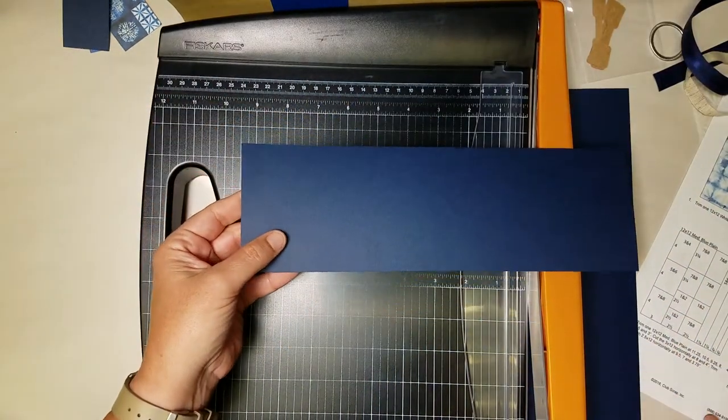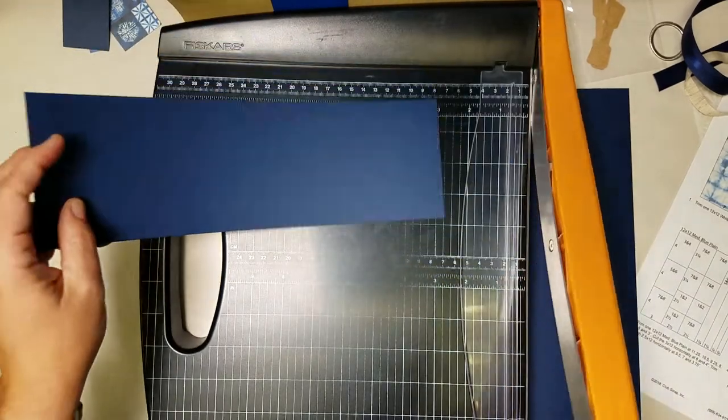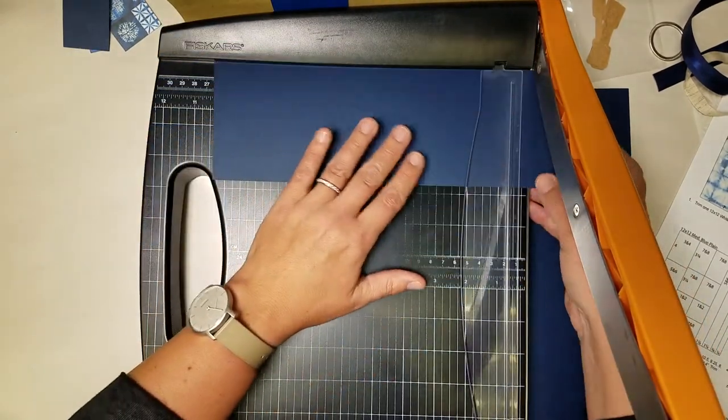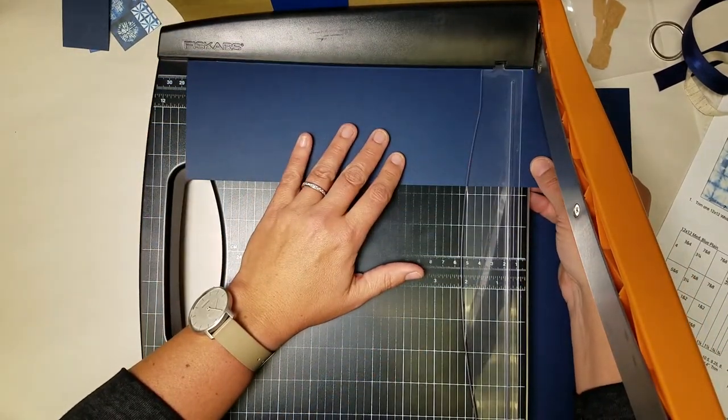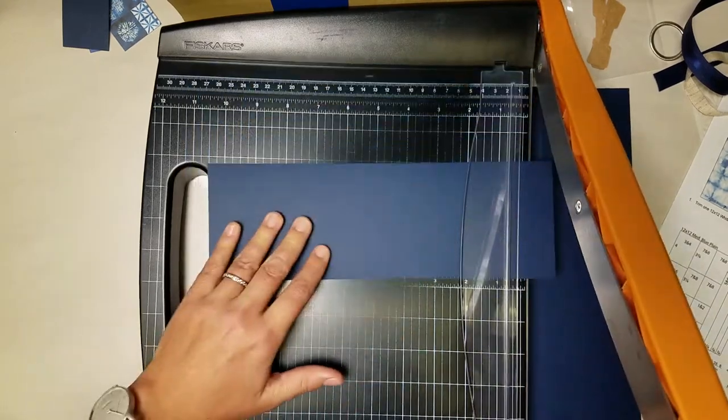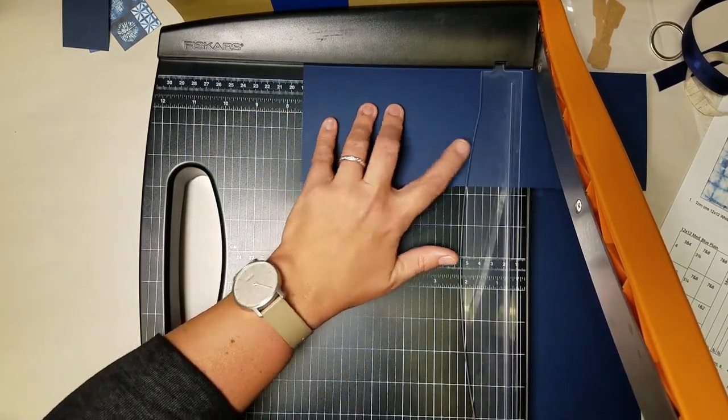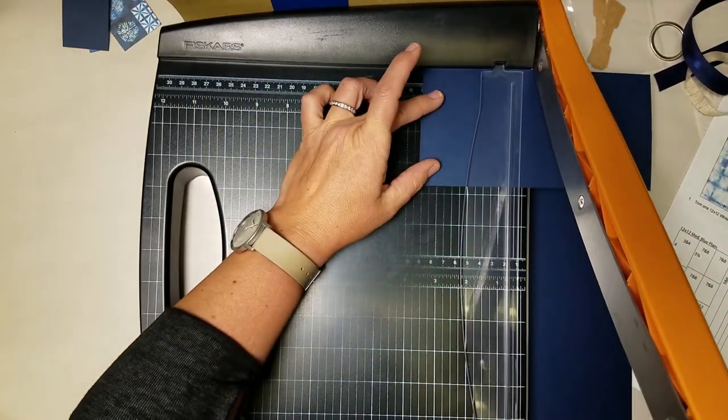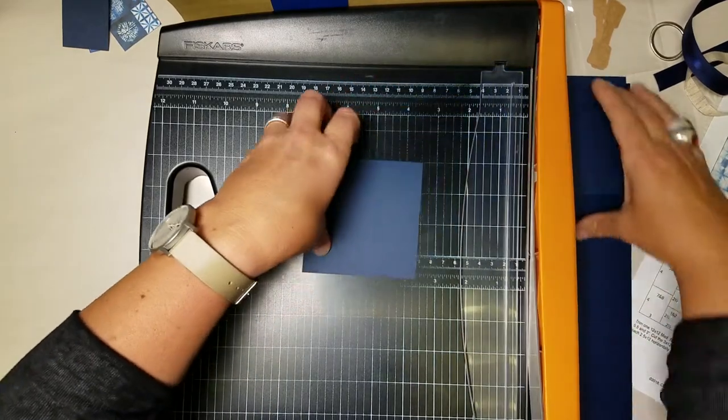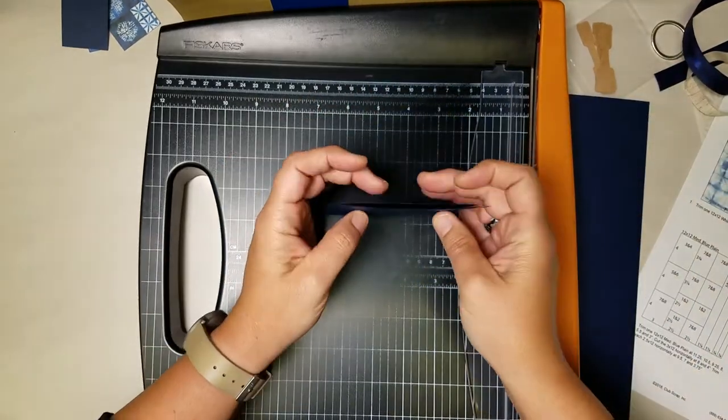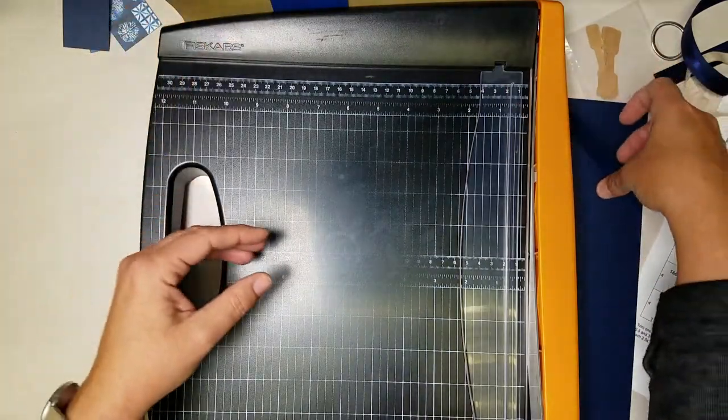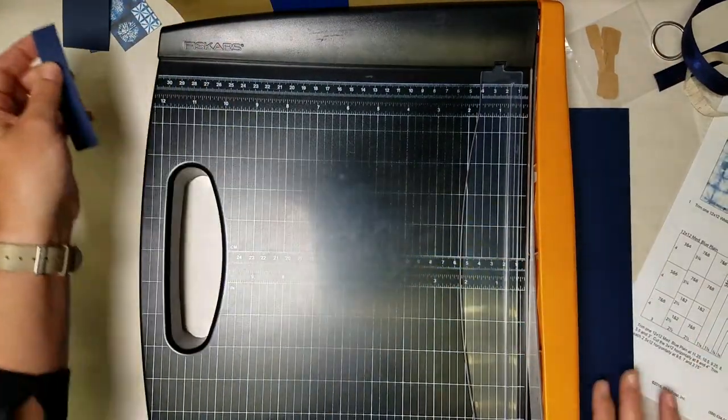The very next strip which measures three and three quarter by twelve will be trimmed horizontally at eleven and a quarter, seven and a half and three and three quarters. All three of the squares you just created are filed in pocket three and four and once again we have a little tiny scrap we won't be using.